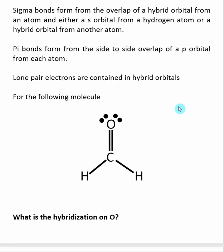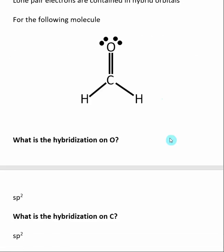Now what we want to do is describe what orbitals overlap to form the covalent bonds in this molecule. The first question I like to ask is, what's the hybridization on the atoms involved in the molecule? Because we're dealing with hybrid orbitals, the hybridization of the atoms are going to determine what hybrid orbitals we are using.